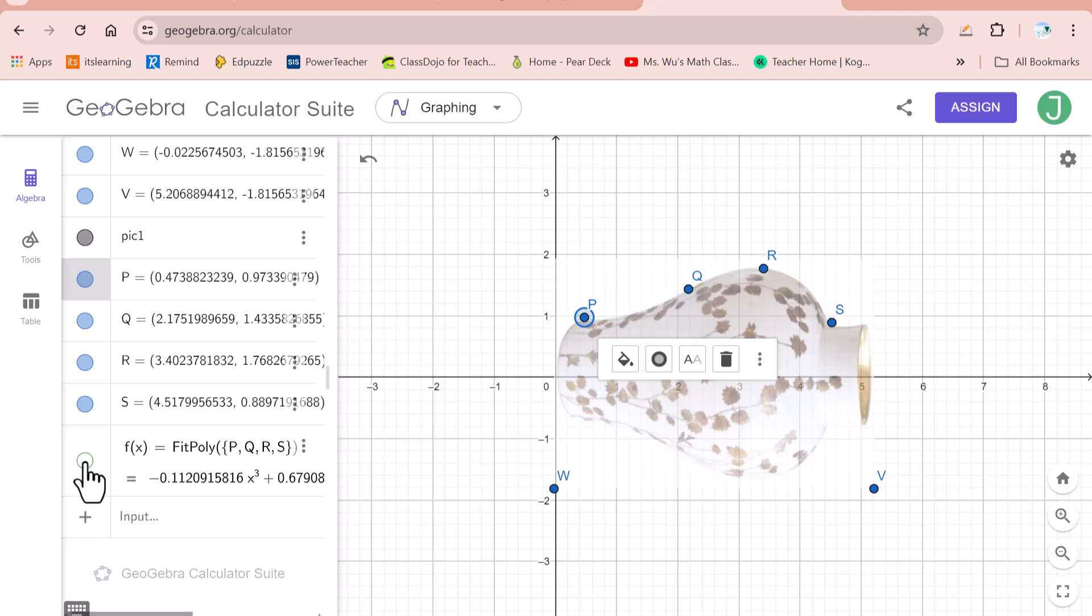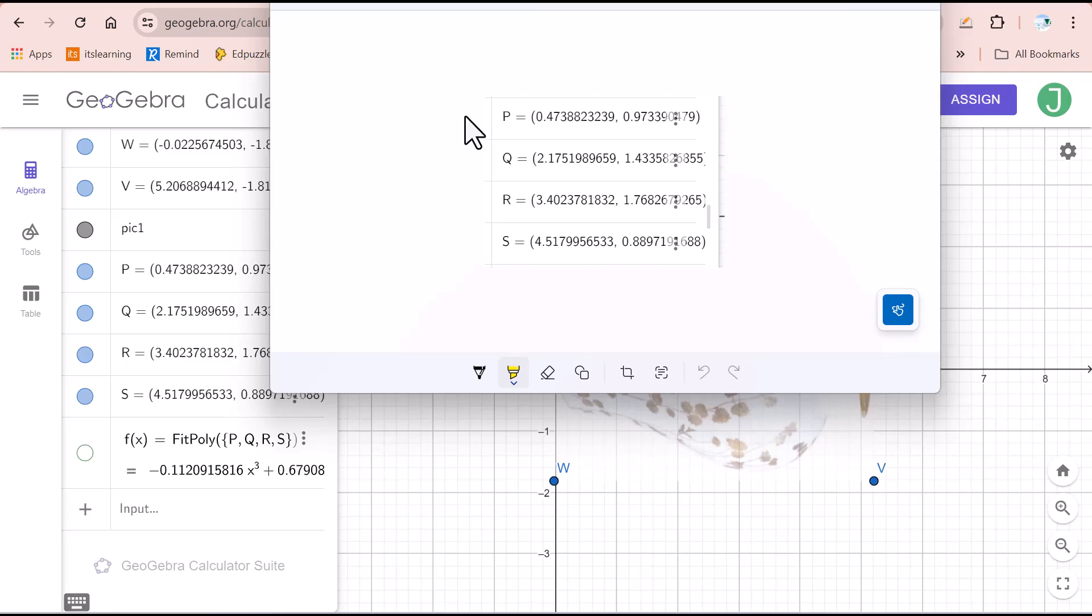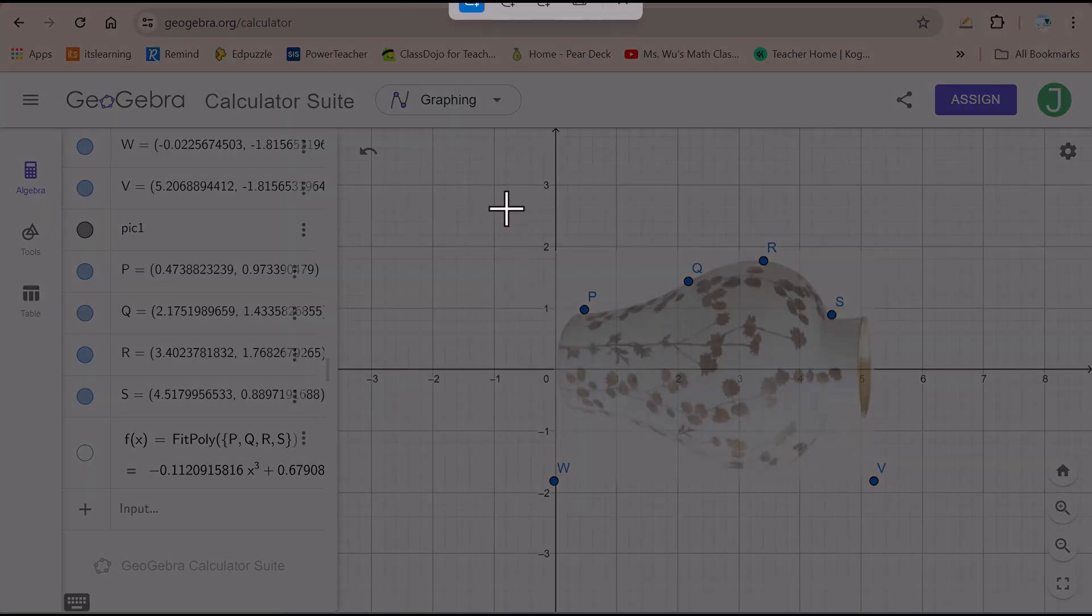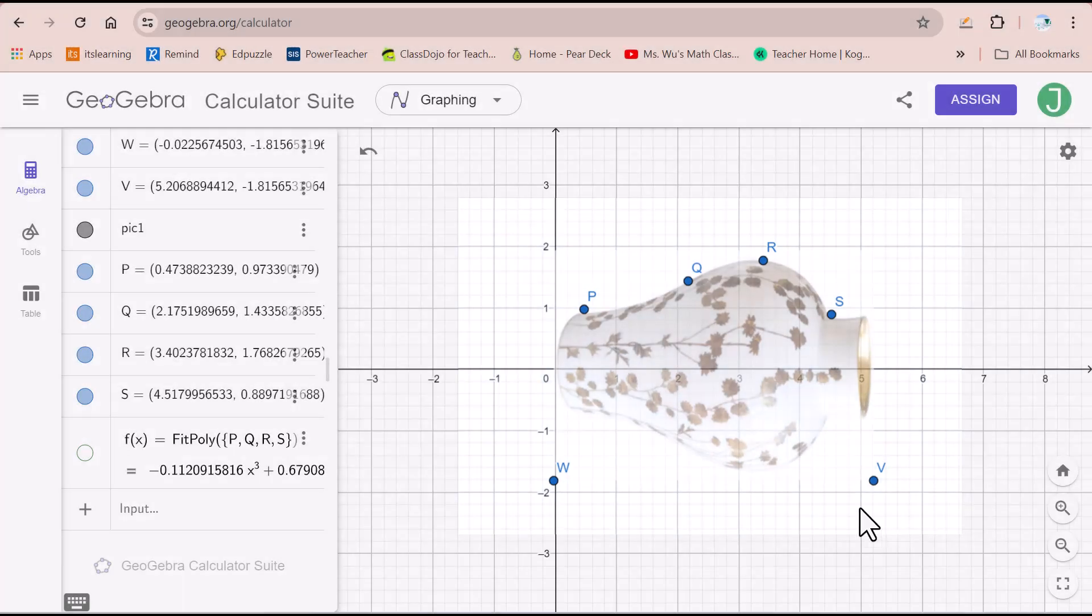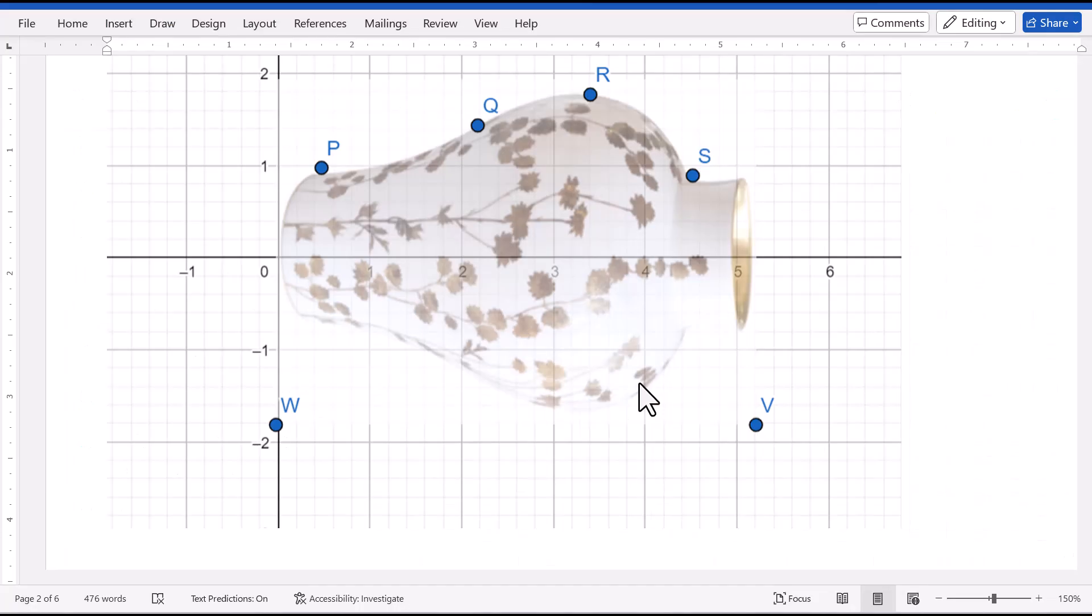And select this function. Then record the coordinates of P, Q, R, S on your paper. Also, you need to use the snipping tools to take a picture of this vase. Copy it to your paper. I copied the image from GeoGebra and pasted it on the paper.